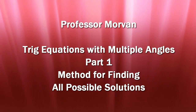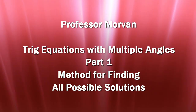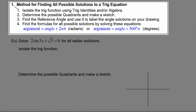In part one of our lesson on trig equations with multiple angles, you will learn a method for finding all possible solutions. We will use these four steps when solving trig equations to find all the infinitely many possible solutions. First, we'll isolate the trig function using trig identities and/or algebra. Second, we'll determine the possible quadrants and make a sketch. Third, we'll find the reference angle and use it to label the angle solutions on your drawing. And fourth, we'll find the formulas for all possible solutions.